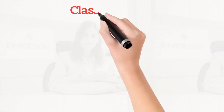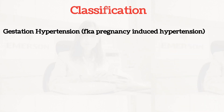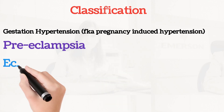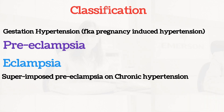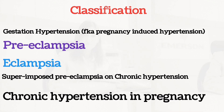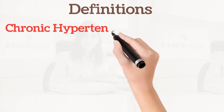We are now starting with classifications. We have gestational hypertension, we also have pre-eclampsia, then eclampsia, superimposed pre-eclampsia, and chronic hypertension — chronic hypertension in pregnancy. These are the classifications, so we can go ahead with definitions.